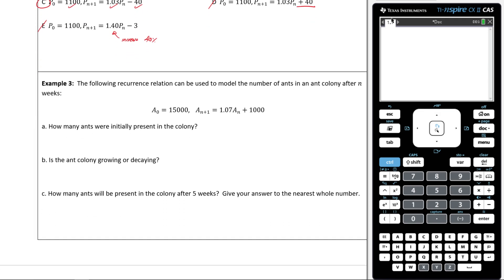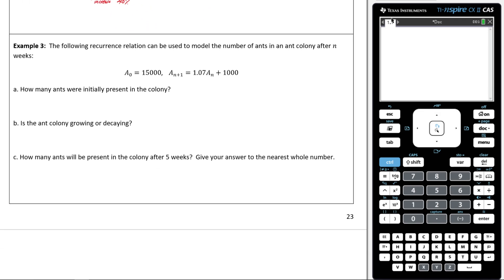Let's now move on to the very last one here. Let's have a look at it. Let's see what we can do. Let's give it a read. It says, the following recursion relation can be used to model the number of ants in an ant colony after n weeks. So we're starting off with 15,000 ants. We're growing by 7%. And we're also adding on 1,000 ants each week because n is the amount of weeks here.